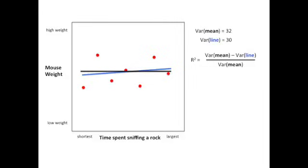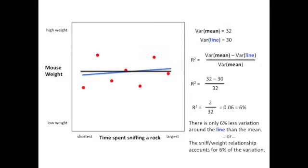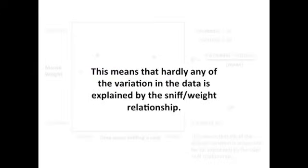Now, we just plug those values into our formula for R squared. By doing the math, we see that R squared equals 0.06, or 6%. Thus, there is only 6% less variation around the line than the mean. In other words, the sniff-weight relationship accounts for only 6% of the total variation. This means that hardly any of the variation in the data is explained by the sniff-weight relationship.